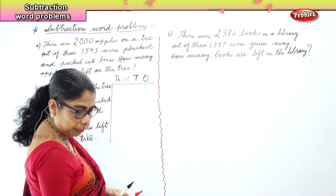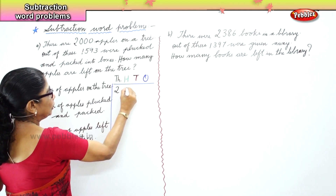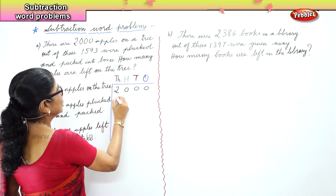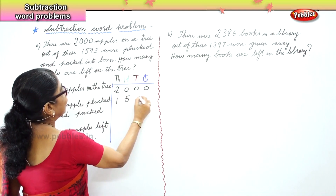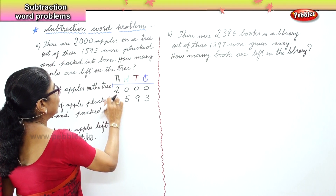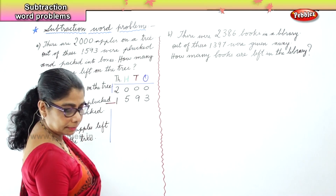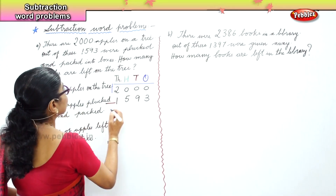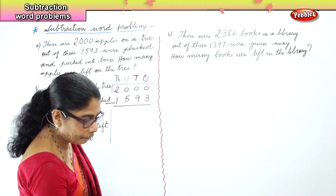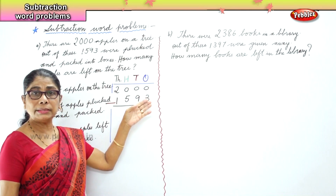Now we put the numbers correctly into the column. Number of apples on the tree: 2,000. Number of apples plucked and packed: 1,593. We put a minus sign. Now when we do the minusing, we must be very careful. In the ones place we have 0 — we cannot subtract 3 from 0, so we need to borrow.